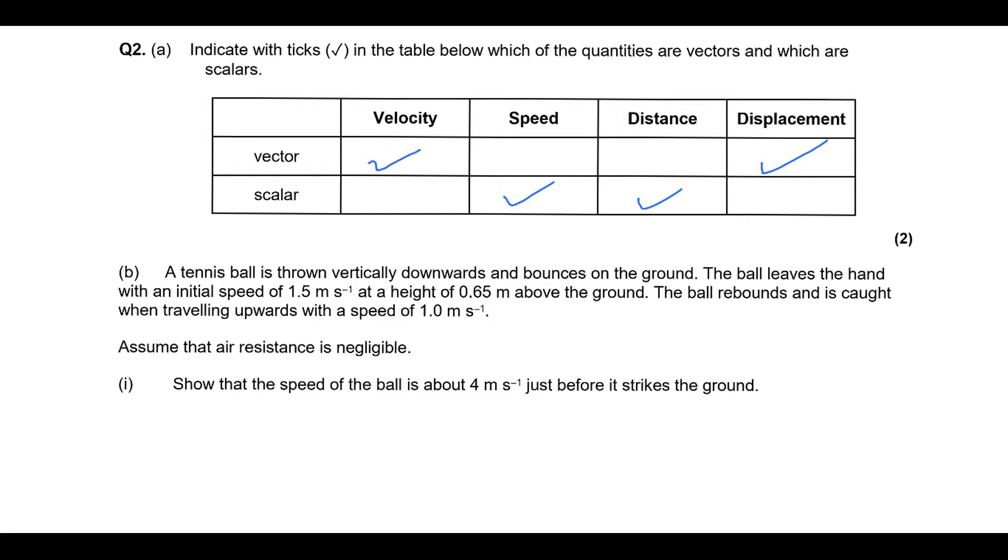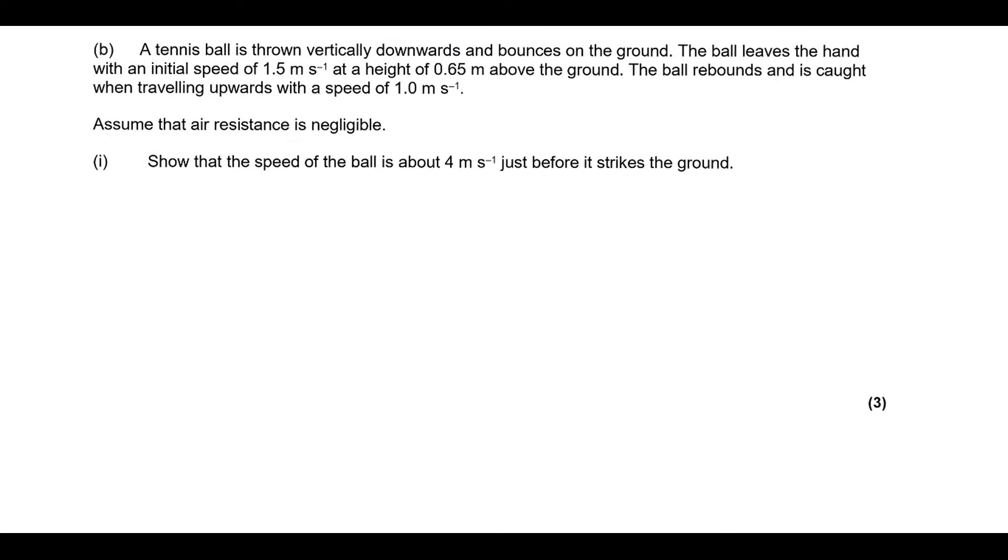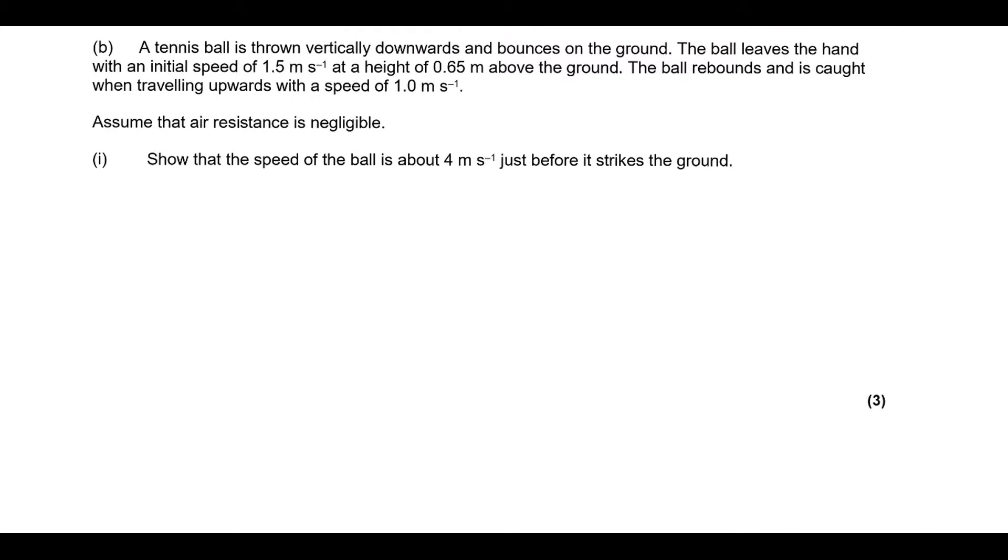Okay, a tennis ball is thrown vertically downwards and bounces on the ground. The ball leaves the hand with an initial speed of 1.5 metres per second at a height of 0.65 metres above the ground. Ball rebounds and is caught when travelling upwards with a speed of 1 metre per second. Assuming air resistance is negligible, show that the speed of the ball is about 4 metres per second just before it hits the ground.